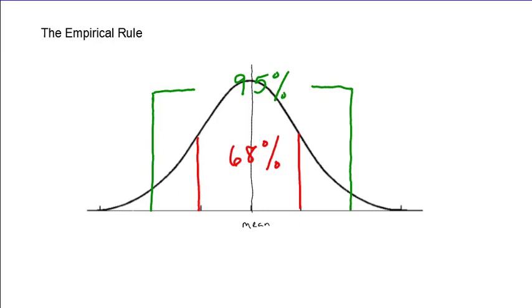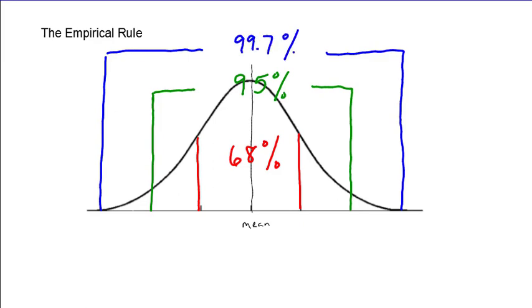And last but not least if I was to go three standard deviations below and above, so I hop down here three standard deviations below and three standard deviations above, then almost all the data 99.7% of all data values fall within three standard deviations of the mean. So it would be a rare event for something to be outside of three standard deviations.